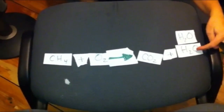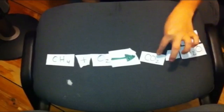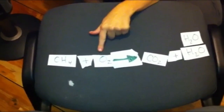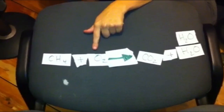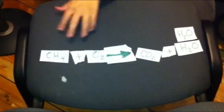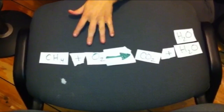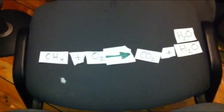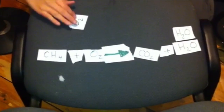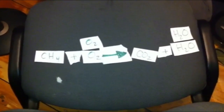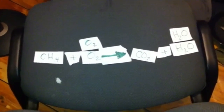Now what we've messed up is that there are one, two, three, four oxygens on the product side but only two over on the reactant side. Does anybody know what we might be able to add on this side easily that will balance this equation? If you guessed oxygen - one oxygen molecule - you're correct.